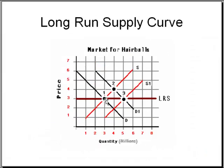What typically happens is there is a change in demand which attracts new market entrants into the industry, followed by an increase in supply. Since it is a constant cost industry, the long-run supply curve is perfectly horizontal.